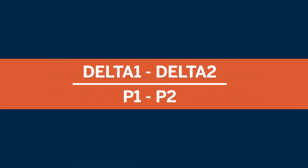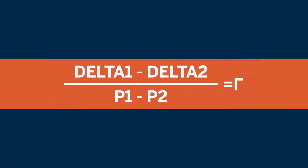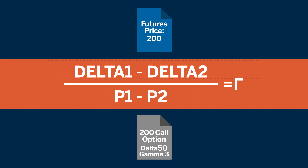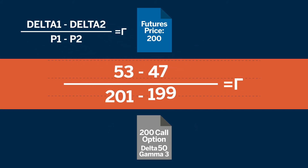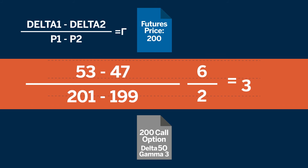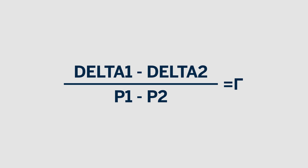Now let's look at how gamma is calculated. Gamma is the difference in delta divided by the change in the underlying price. For example, the future is at 200, a 200 call option has a 50 delta, and the option's gamma is 3. If the futures price moves to 201, the option's delta is now 53. If the futures price moves down to 199, the option's delta is 47. Across the two-point underlying future move, the delta changed by 6. Remember, delta measures the speed or rate of change of the option premium, and gamma measures the acceleration or rate of change in the delta.